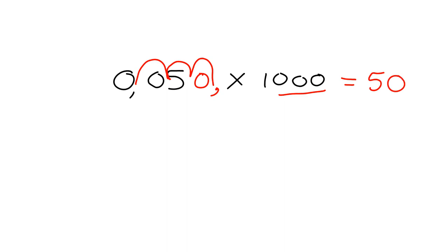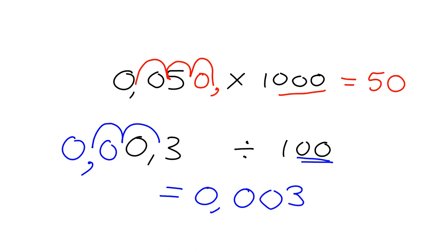If we take, for example, 0.3 and we need to divide it by 100, we're going to be shifting the place value over so it becomes smaller. We need to move it over by one, two places, making it smaller, and so our comma will come in there and our answer is 0.003.